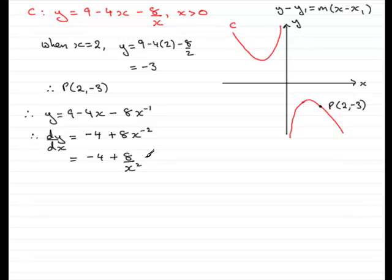But we're interested in the gradient at the point where x has a coordinate of 2. So if we just say that when x equals 2, we can get the value of that gradient. So dy by dx equals minus 4 plus 8 divided by 2 squared.